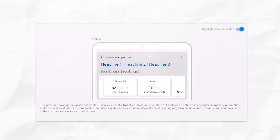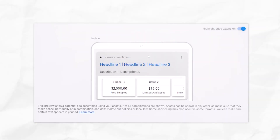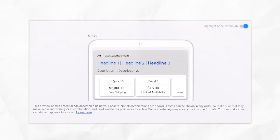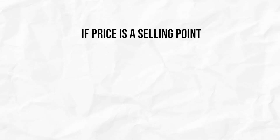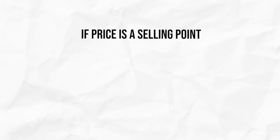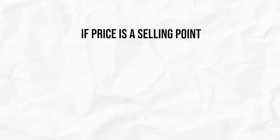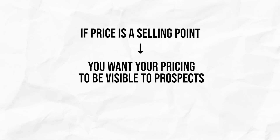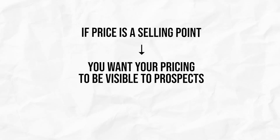Price extensions — the name is fairly self-explanatory. They allow you to show the prices of various products, services, et cetera, in your Google Ad. They do a couple of good things. Firstly, if price is a selling point of yours, if you're competitive on price, you may want to put that front and center as a price extension.